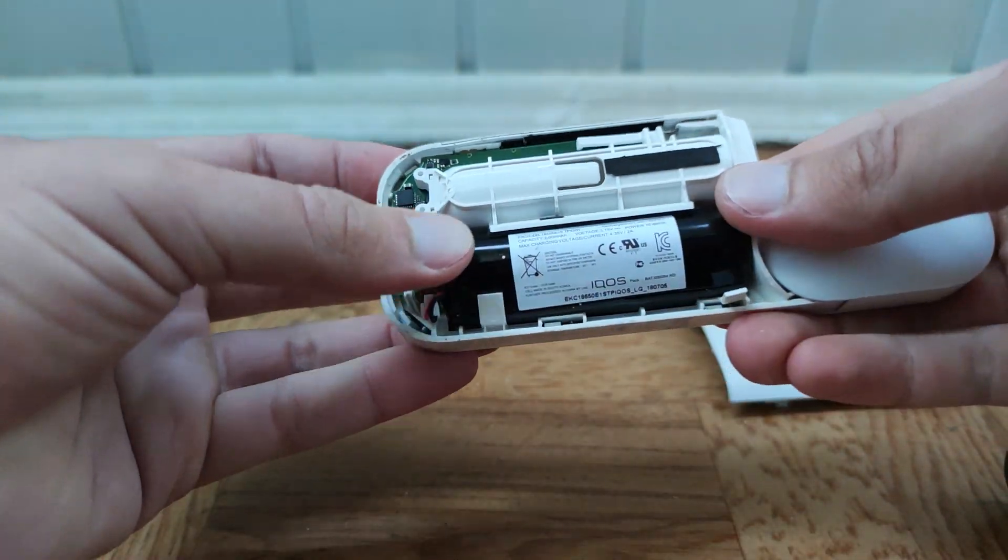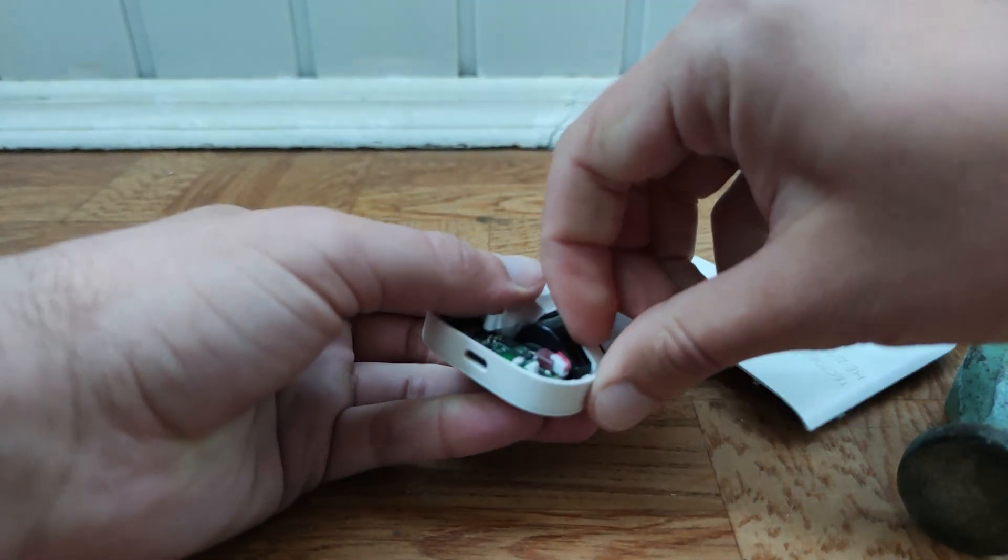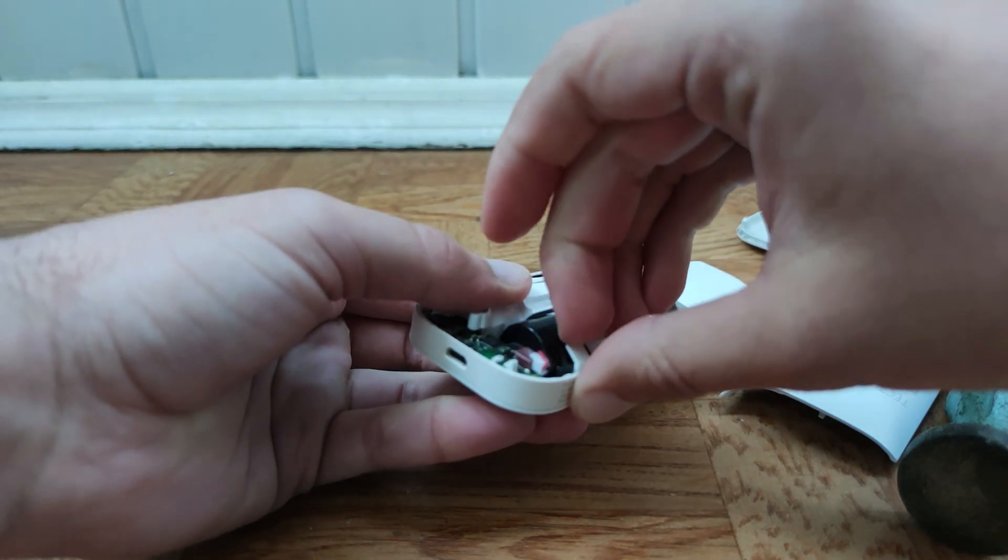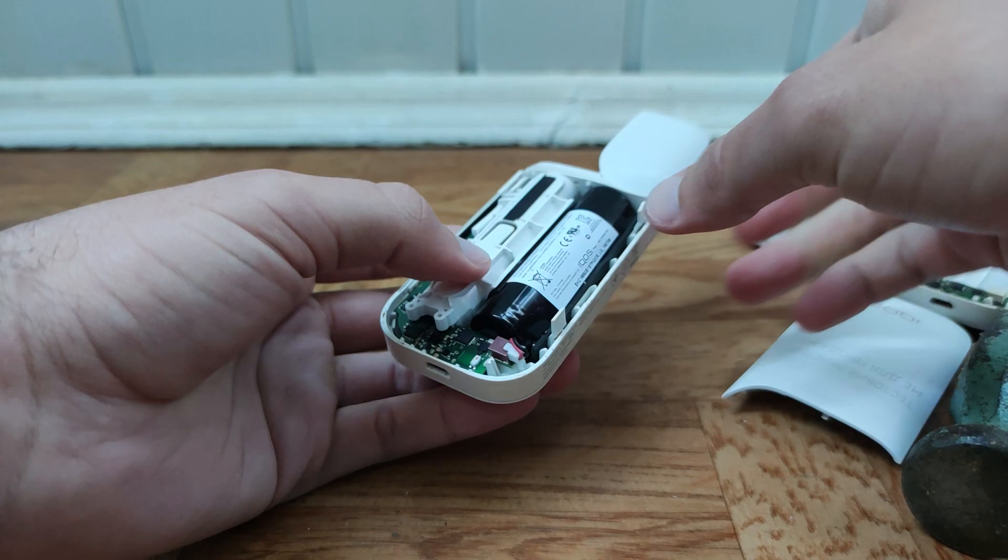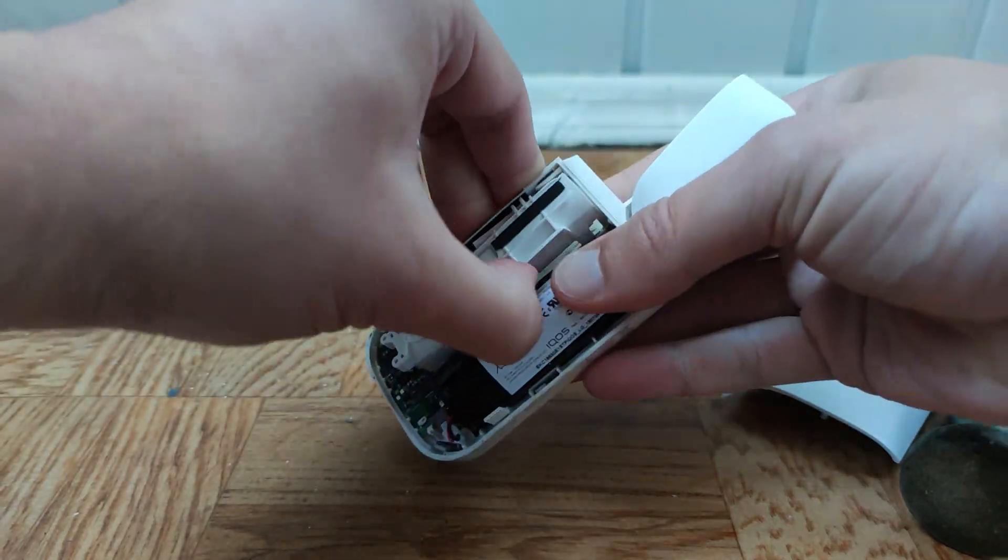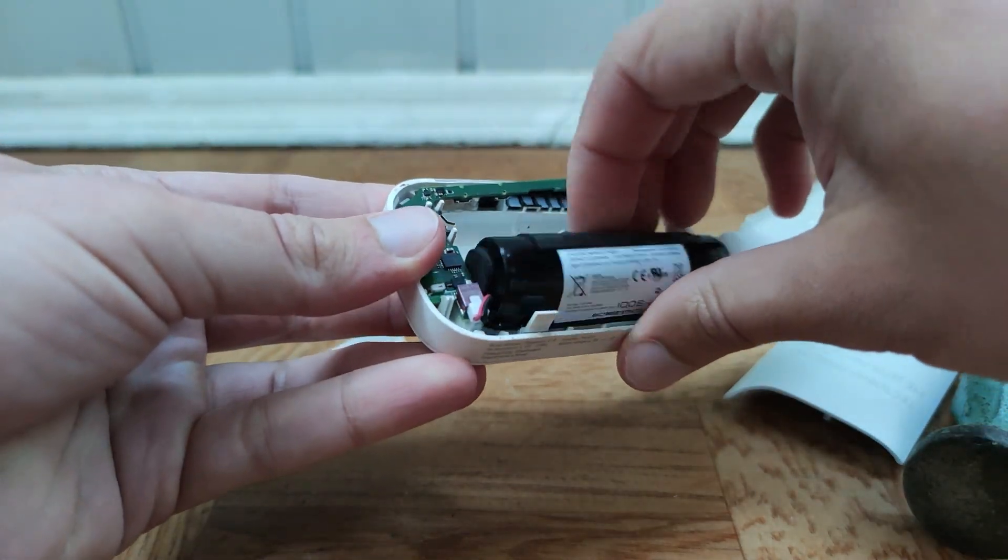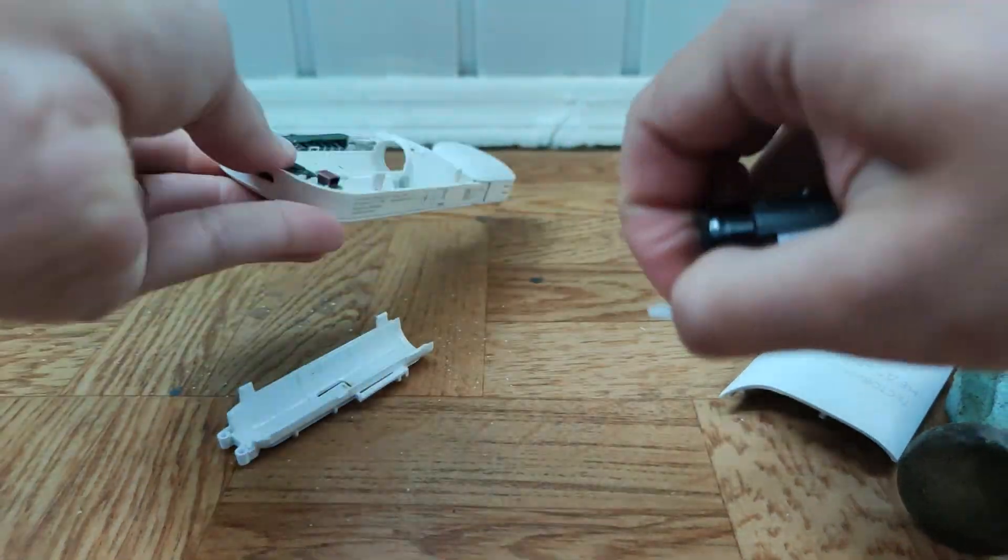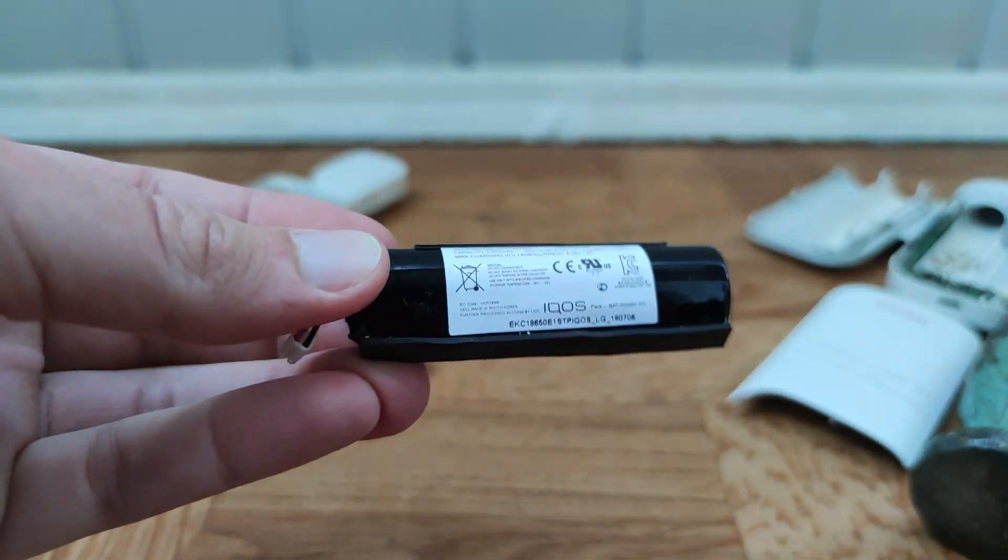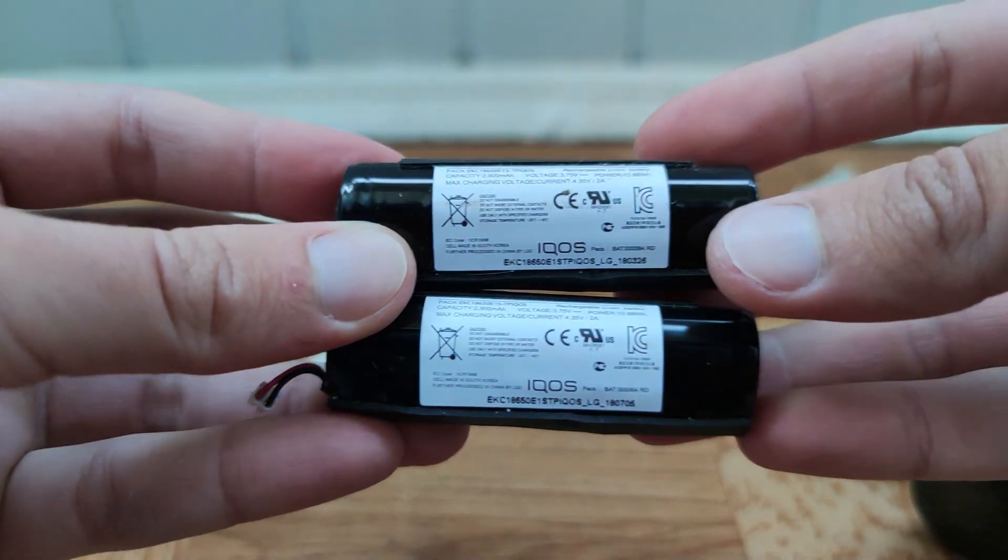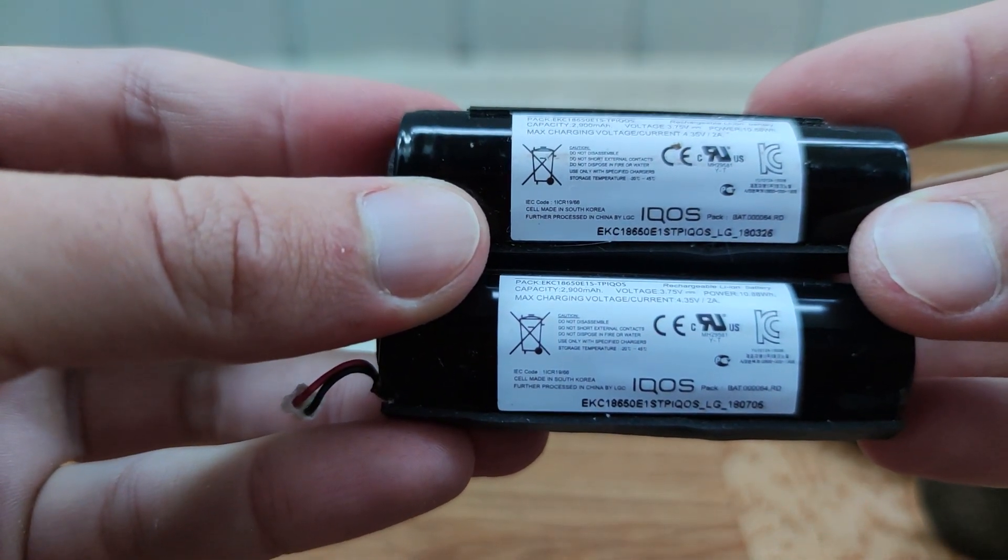And what we can see, battery, and it holds by some plastic parts. It's not hard to extract it, connector, and what we can see, two batteries from two devices.